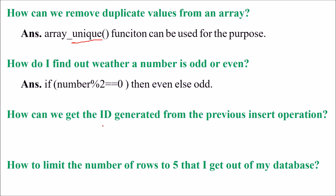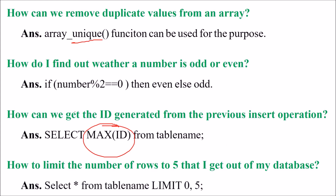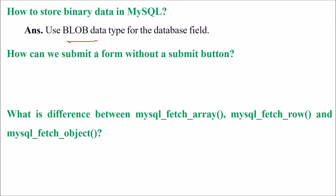How can we get the ID generated from the previous insert operation? You can use: SELECT MAX(id) FROM some_table_name. How to limit the number of rows to 5 from my database? You can use: SELECT * FROM table_name with LIMIT 0, 5. How to store binary data in MySQL? You can use the BLOB data type for the database field.